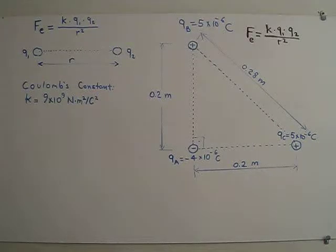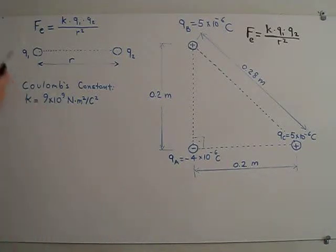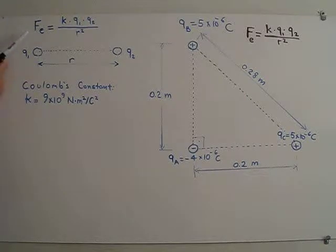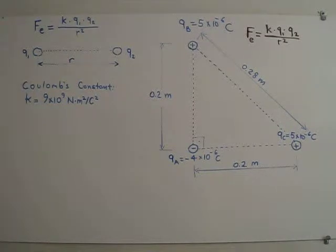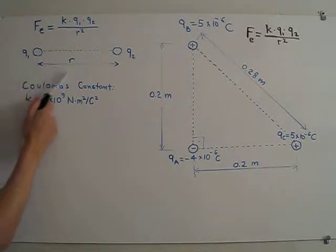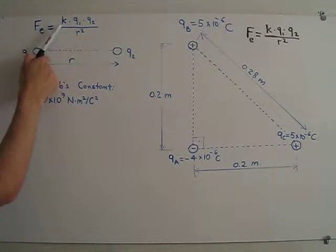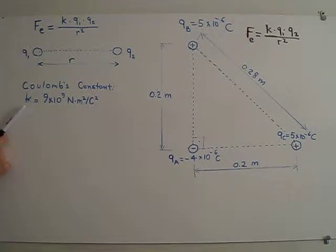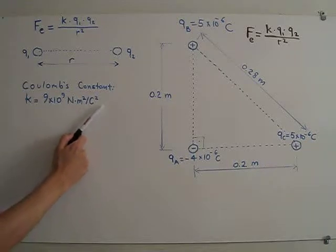Before calculating the electric forces acting on each of the charges, let us recall the formula for electric force. Electric force Fe is given by K times Q1 times Q2 over R squared, where Q1 and Q2 are two point charges separated by a distance R in meters. K is the Coulomb's constant and it's equal to 9 times 10 to the 9 Newtons meters squared per Coulombs squared.